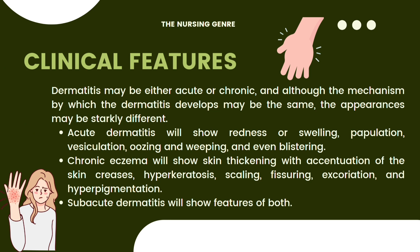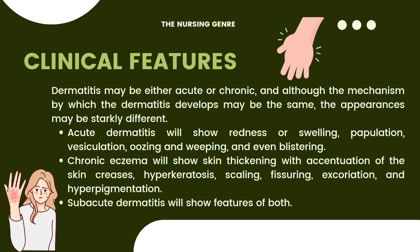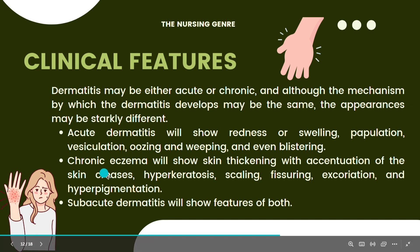Clinical features: dermatitis may be either acute or chronic. Although the mechanism by which dermatitis develops may be the same, the appearance may be starkly different. Acute dermatitis shows redness, swelling, weeping, papulation, and vesiculation — including blisters and oozing. Chronic dermatitis shows skin thickening, accentuation of skin creases, hyperkeratosis, scaling, fissuring, excoriation, and hyperpigmentation, making the skin area appear dark.